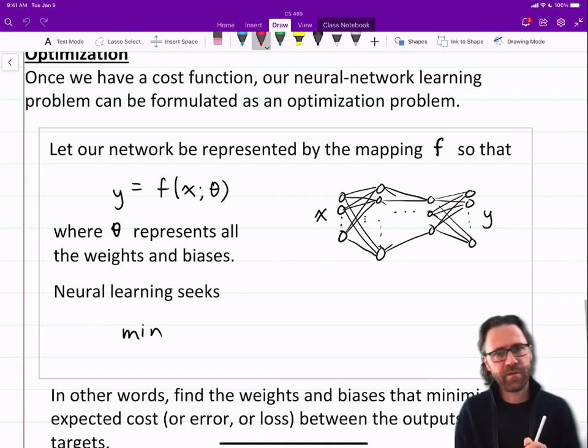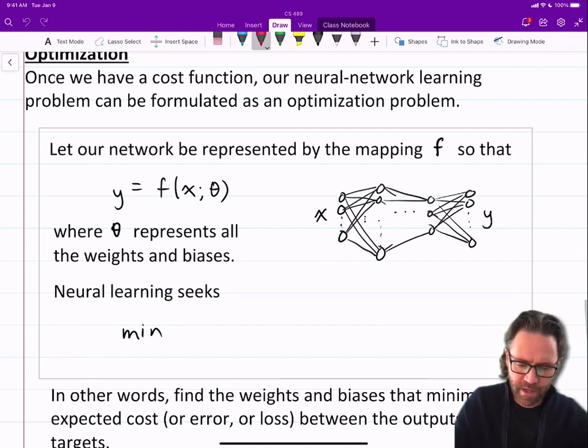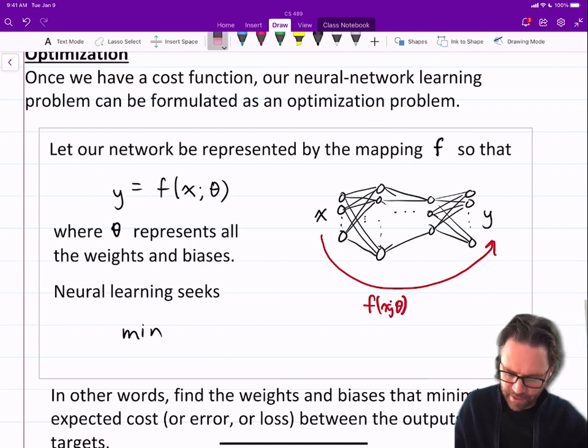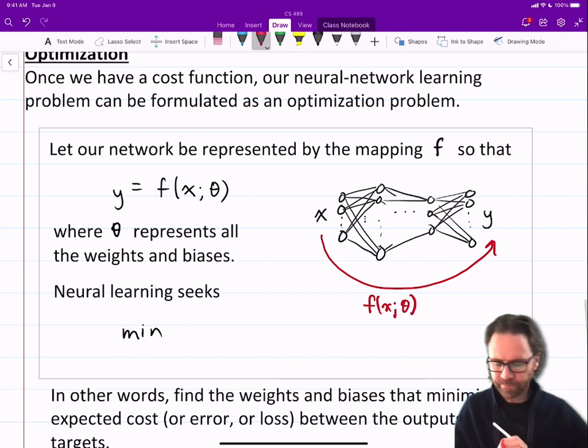So let our network be represented by the mapping f, so that y = f(x, θ), where θ represents all the weights and biases in our network, x is the input, and y is the output. So in this drawing on the right, we have x mapping to y through f(x) given weights and biases θ. It's just the input, the output, the mapping, the entire neural network in that context.